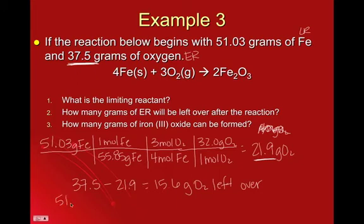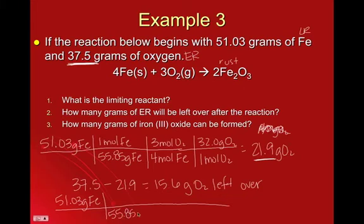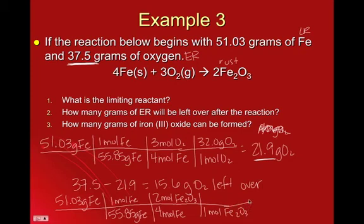So going on to number three. So we're going to do our limiting reactant of 51.03 grams of iron, and we're going to convert that to grams of iron 3 oxide, also known as rust. So molar mass is still the same. Then our mole ratio is going to be our 4 moles of iron to 2 moles of rust. And then we need our molar mass of rust. So each mole of Fe2O3 has a mass of, let's see, 2 times 55.85 plus 48 of 159.7.